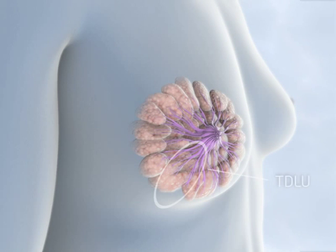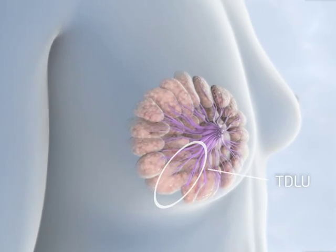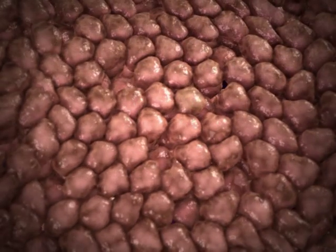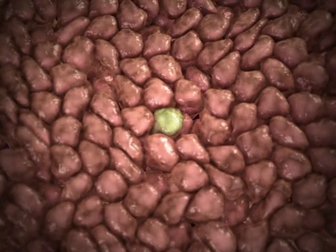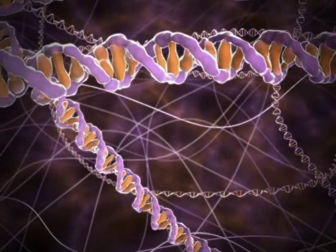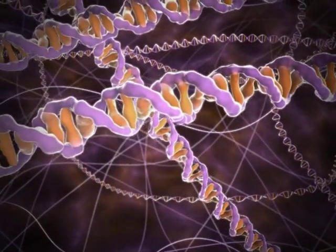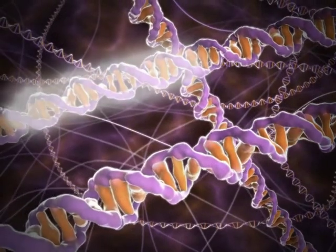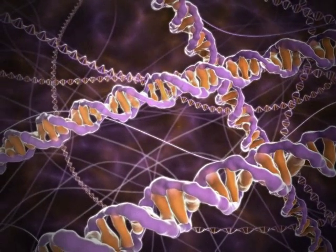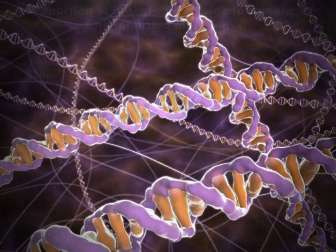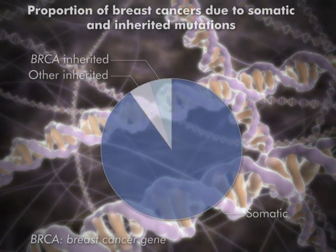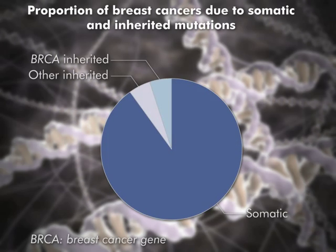Most breast cancers originate in the epithelial cells of the terminal duct lobular unit. The development of breast cells from a normal to a malignant phenotype is due to an accumulation of genetic alterations that result in activation of proto-oncogenes and inactivation of tumour suppressor genes. The majority of breast cancers are due to somatic mutations that may occur due to increasing mutation rates and faulty DNA repair systems.